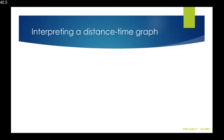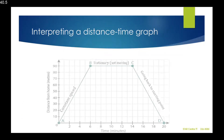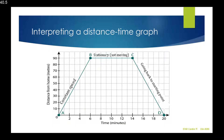Interpreting a distance-time graph. Here we have a sample distance-time graph, and as you can see, distance is on the y-axis and time is on the x-axis. Where we have a graph going upwards, or a line with a positive gradient, it has a constant speed or velocity.